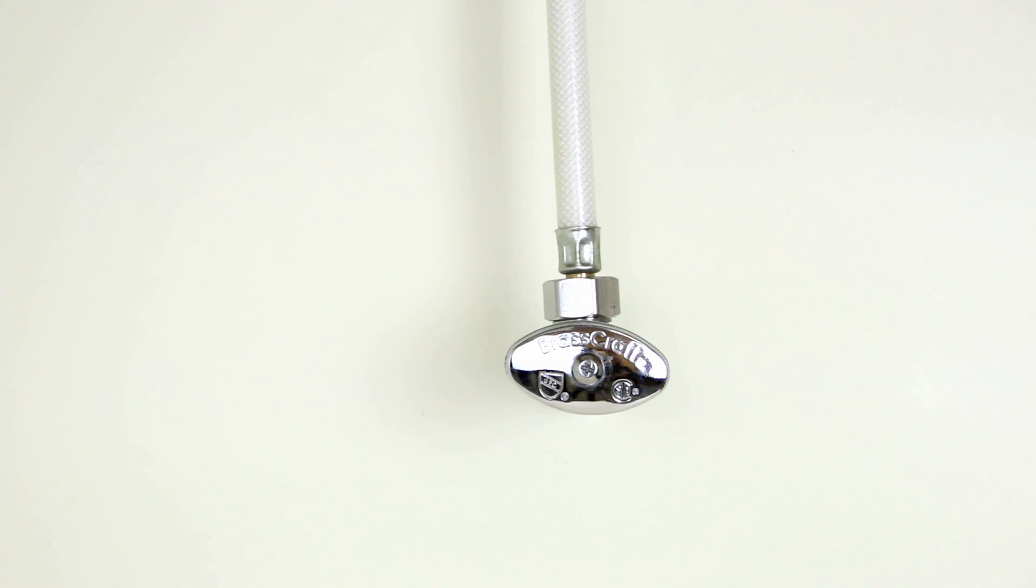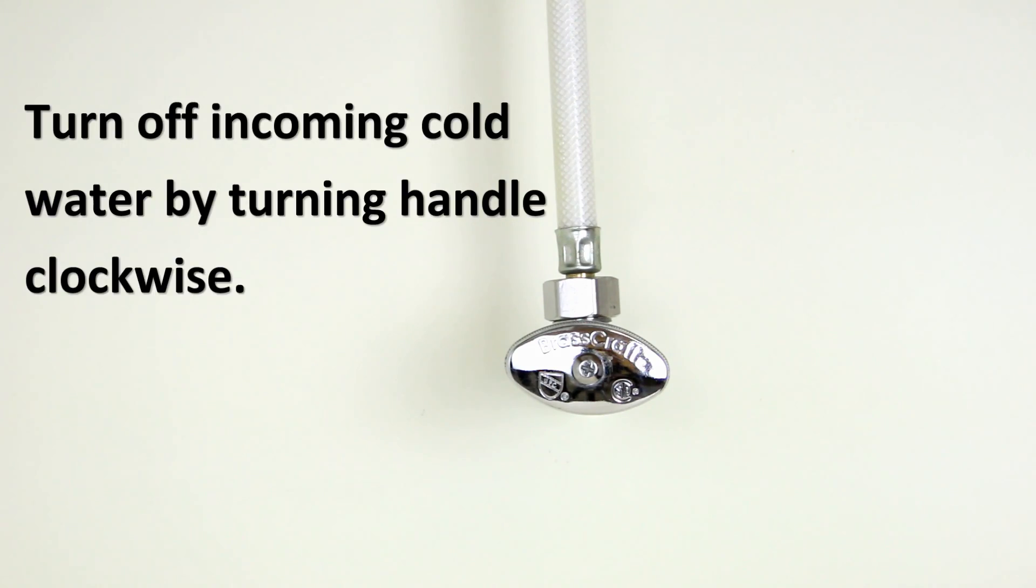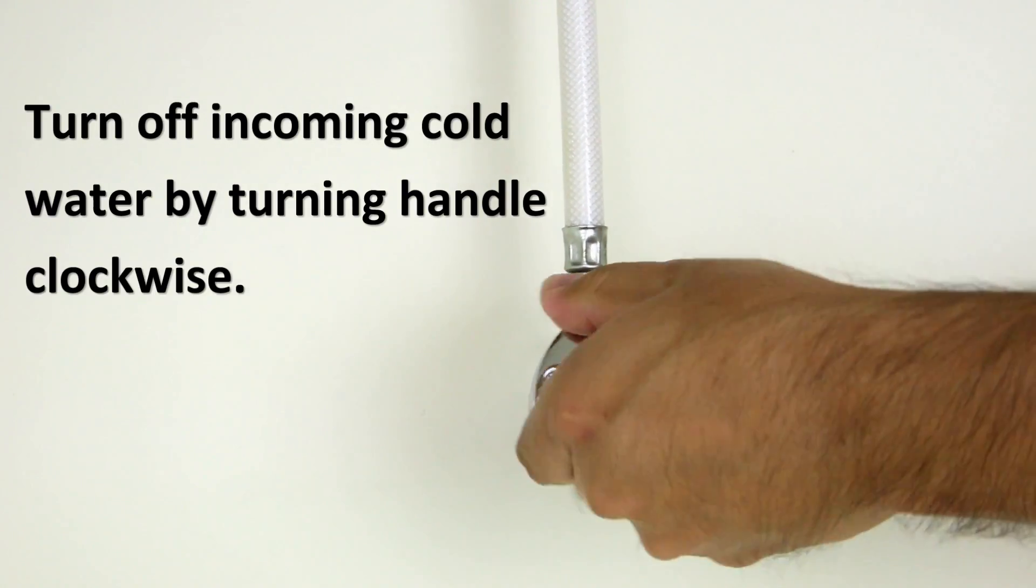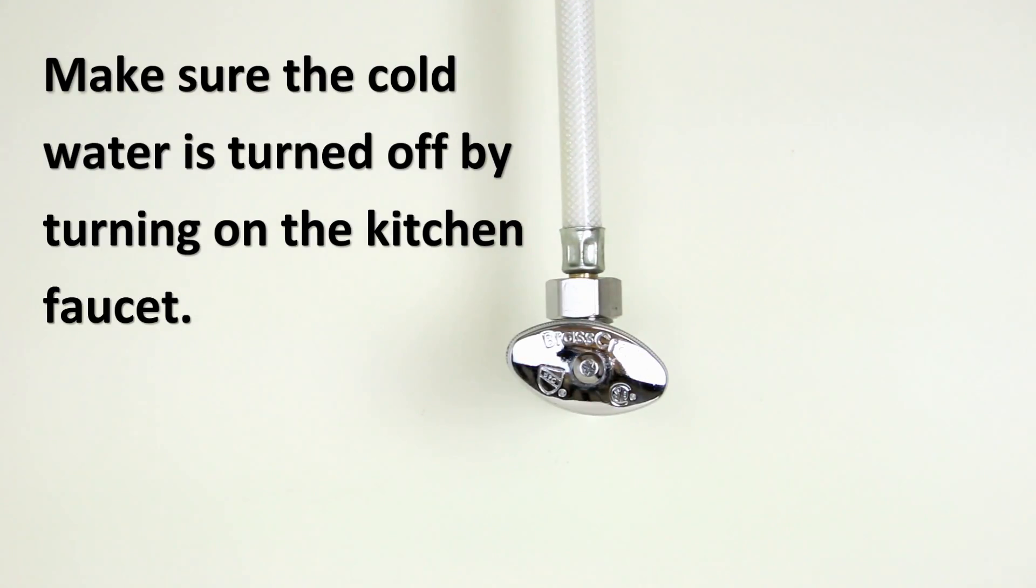Locate the cold water supply valve underneath the kitchen sink. It is usually a round or oblong handle. Completely turn off the incoming cold water by turning the handle clockwise. Check to make sure the cold water is turned off by turning on the kitchen faucet.